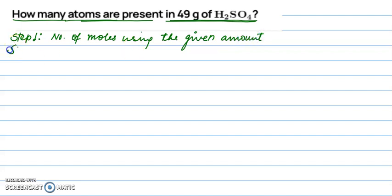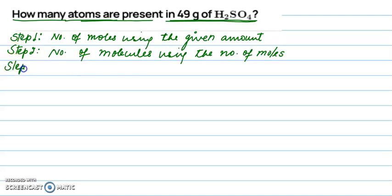In step two, we'll find the number of molecules using the number of moles that we have already found in step one. Step three: we'll find the number of atoms using the number of molecules that we have found in step two.